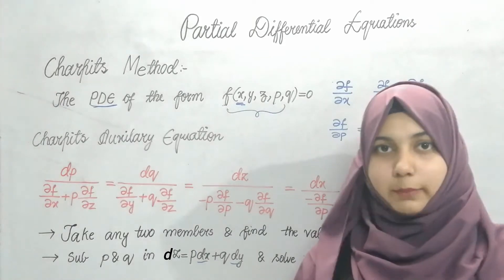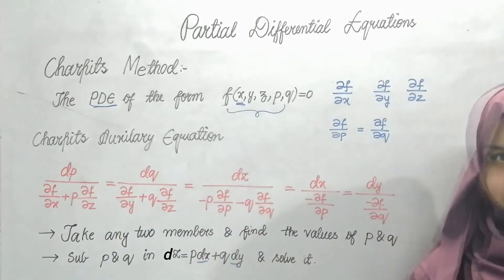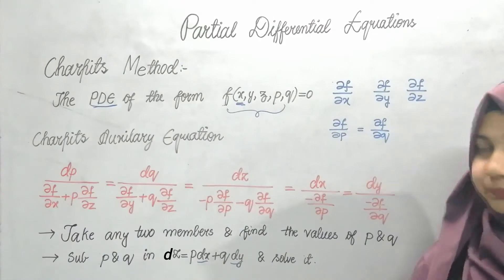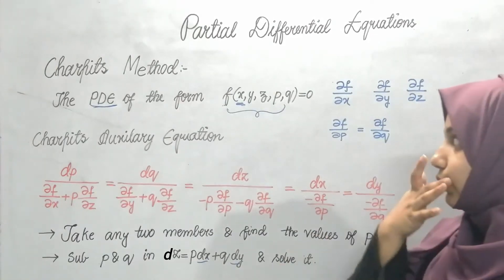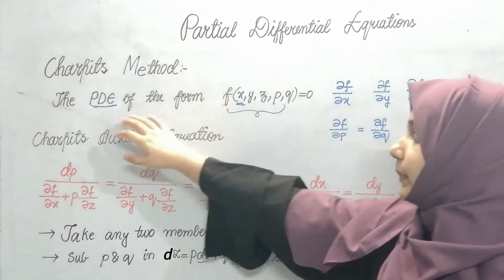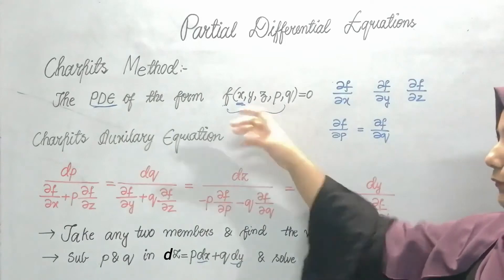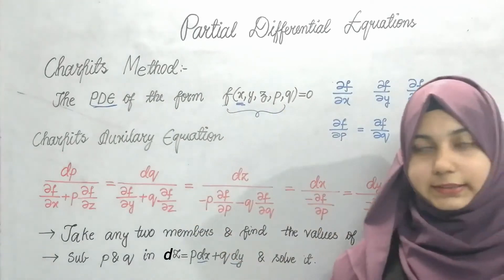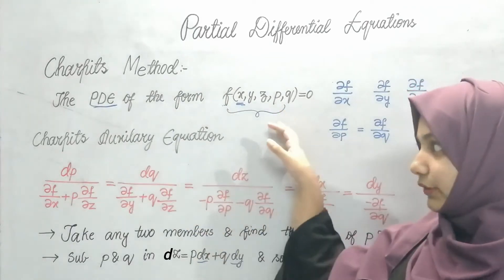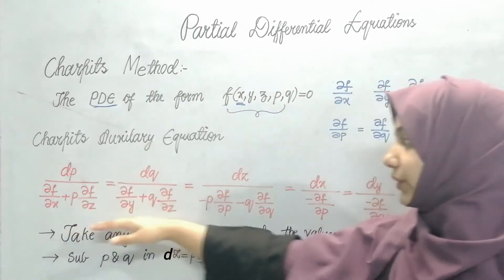After substituting, I need to solve it — solve it by integrating. So that's what we need to do. My PDE will be in the form involving x, y, z, p, q. After that I have the auxiliary equation, I substitute these values. For substituting, I need to partially differentiate f with respect to each term: x, y, z, p, and q.